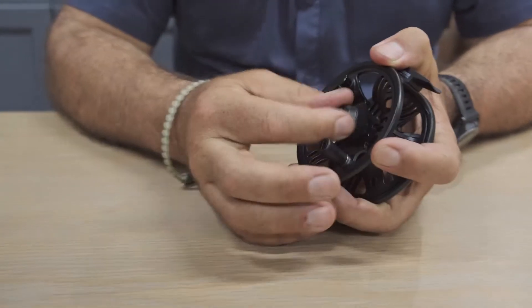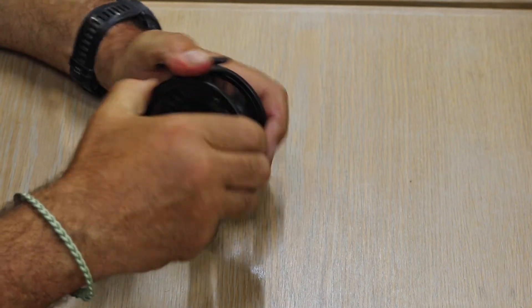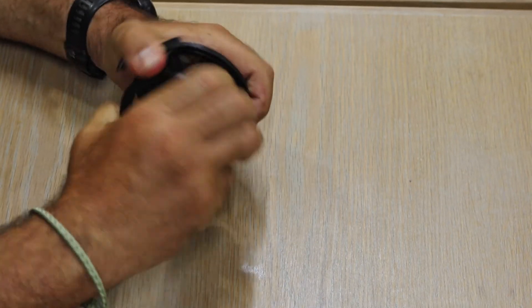First thing you want to do is loosen the center drag knob. It's held on with an O-ring, so you just have to loosen it enough so you can pull the spool off. Put that aside.